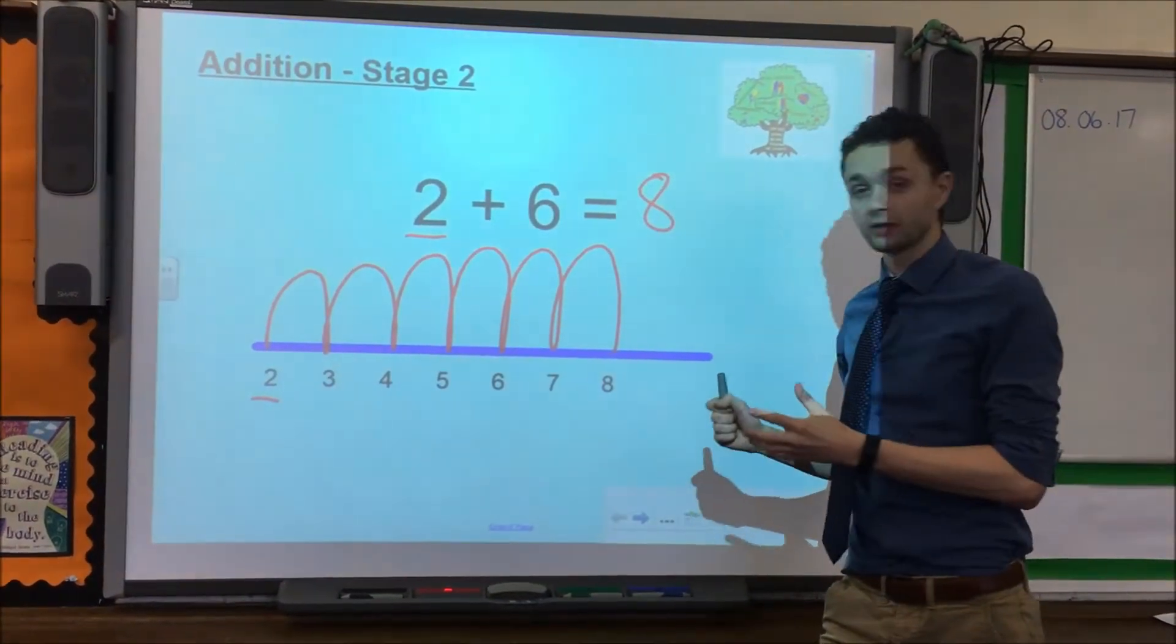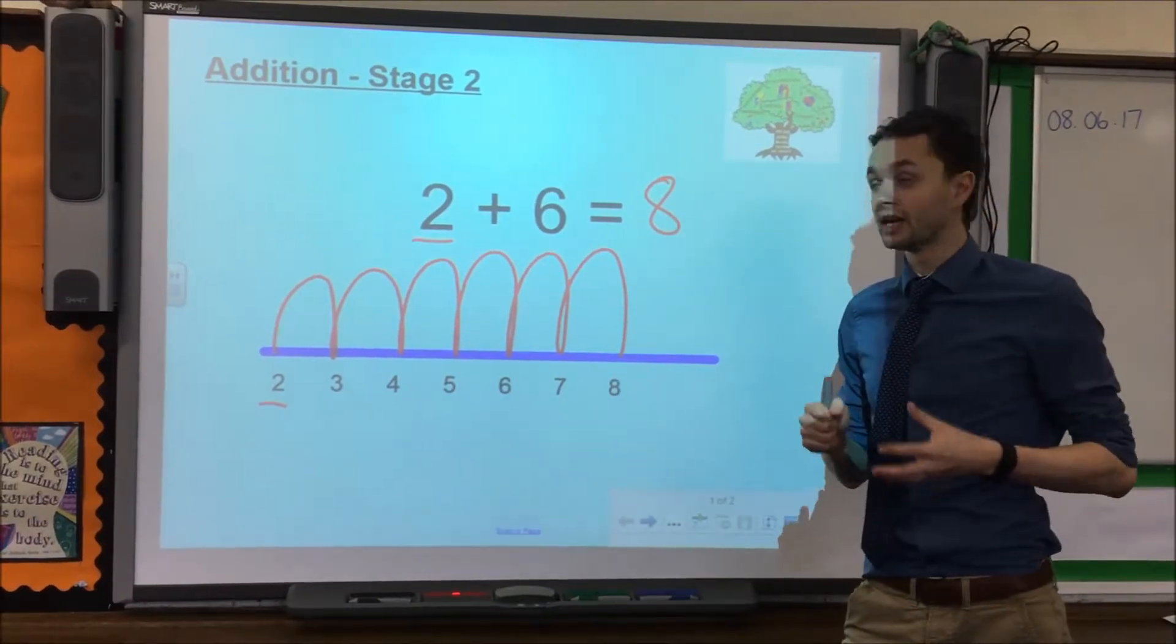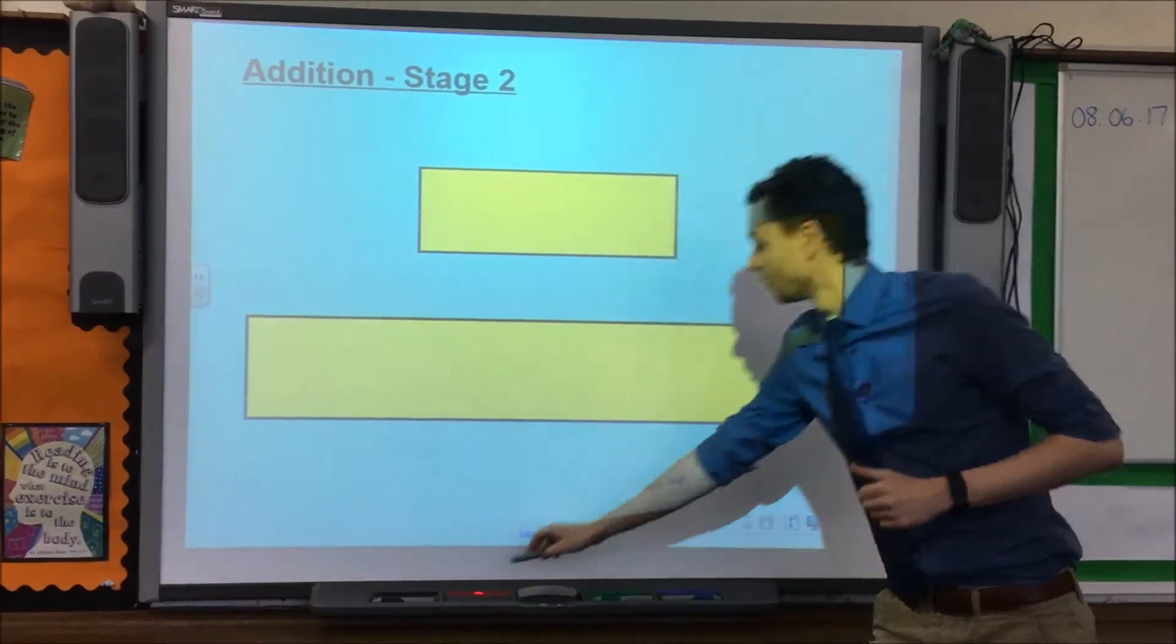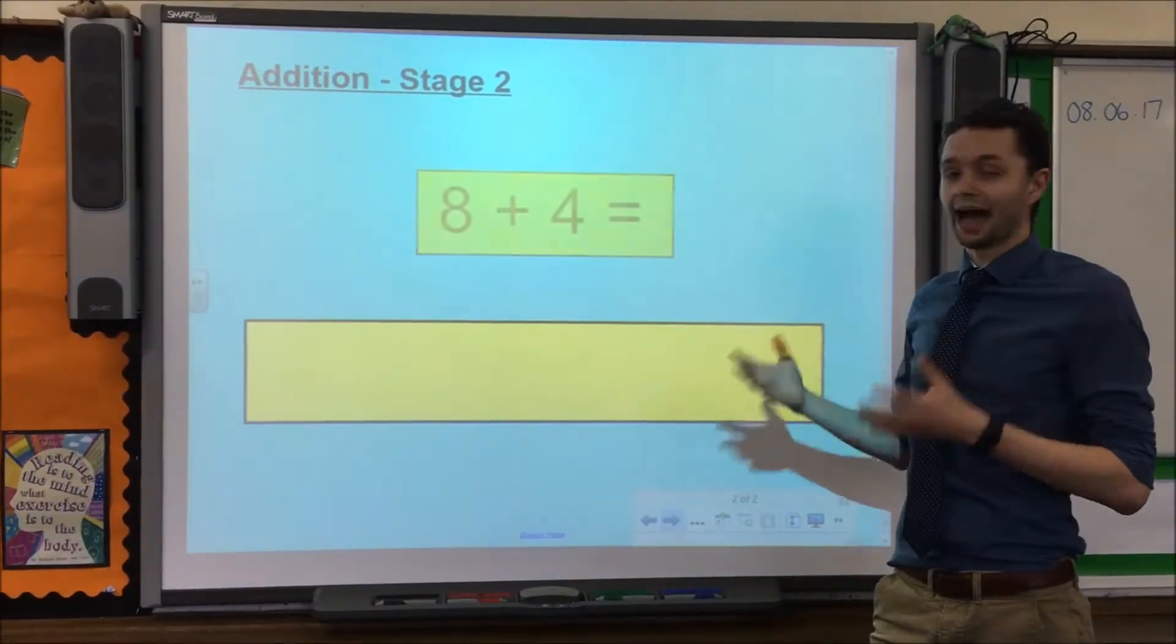Once children are secure with this method then and only then can they look at calculations that involve crossing the tens barrier. For example, this calculation here, 8 add 4.